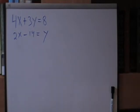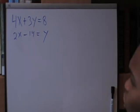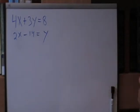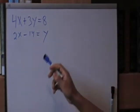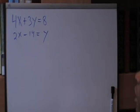Good afternoon, folks. In this video, I would like to solve this system of equations by substitution. So, we have our two equations: 4x plus 3y equals 8, and 2x minus 14 equals y. And I'd like to solve by substitution.